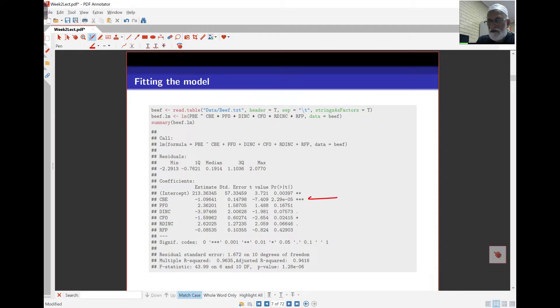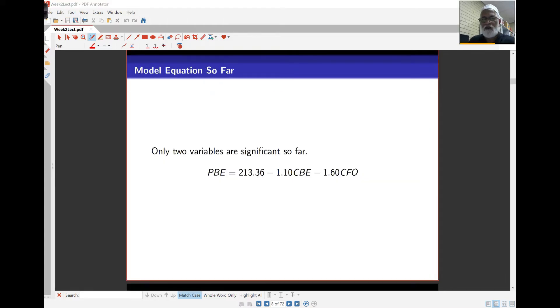So here, this variable here, which is CBE, and this one here, which is CFO, are the only ones with p-values less than 0.05. So at the 5% significance level, those are the only significant variables. So based on the model so far, this is the model equation.